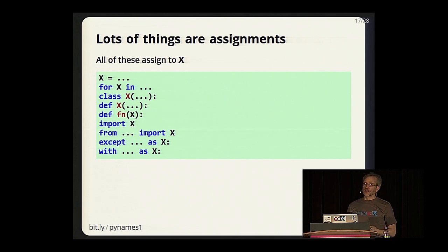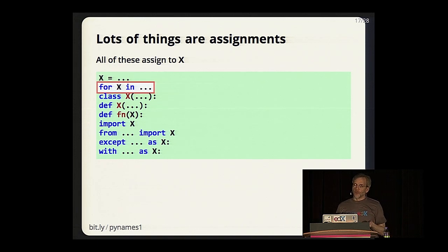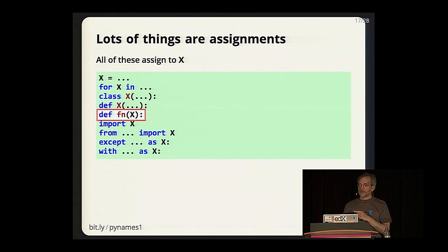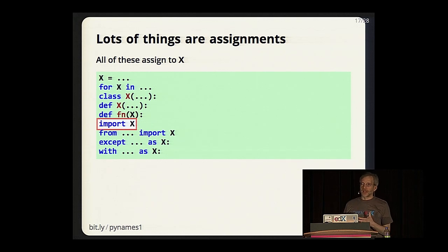Lots of things are assignments in Python. The assignment statement is the obvious way to make a name have a new value. But in a for loop—`for x in something`—that's actually assigning to x over and over again. When you define classes or functions, you are assigning to that name. Most importantly, all the arguments in your functions are assignments to the local names in the function. And import is exactly the same—you don't get into many cases where you have to worry about how assignment works with import, but it is identical.